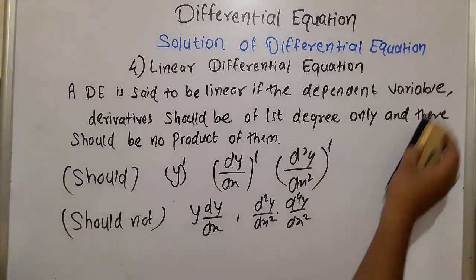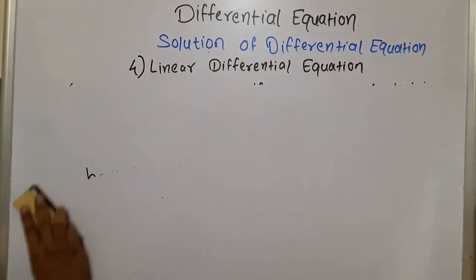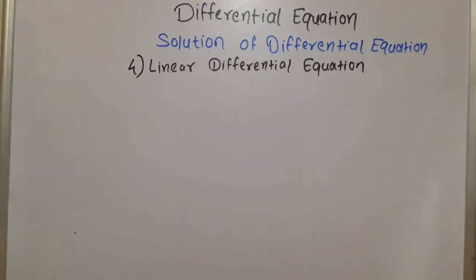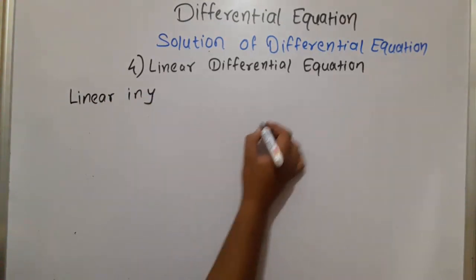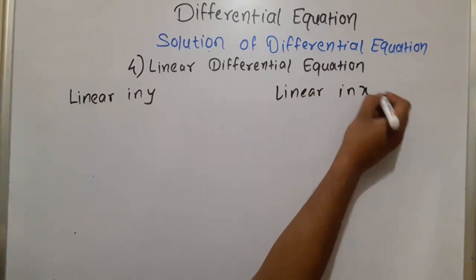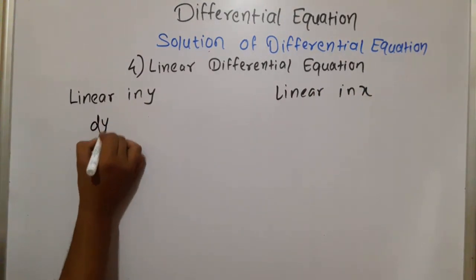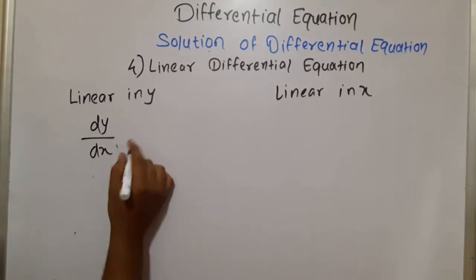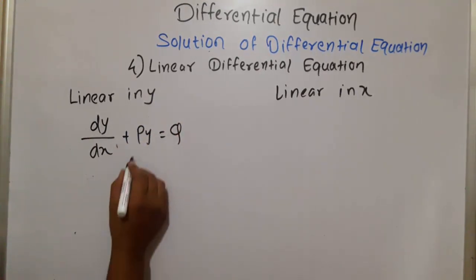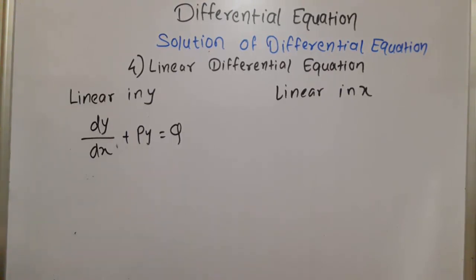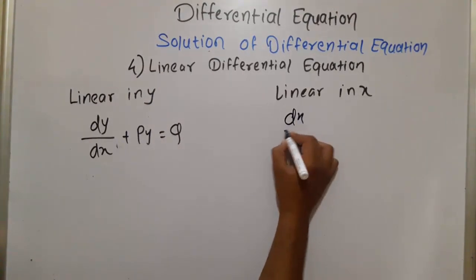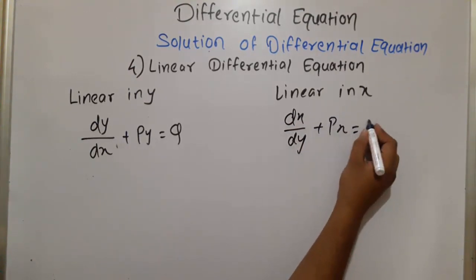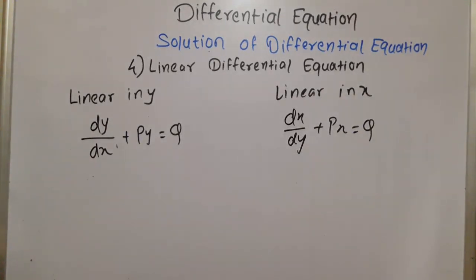We now study how to find the solution of a linear differential equation. There are two forms: linear in y and linear in x. The form linear in y is: dy/dx + P·y = Q, where P and Q are functions of x or constants. The form linear in x is: dx/dy + P·x = Q, where the roles of x and y are swapped.